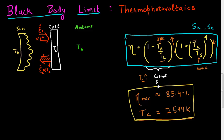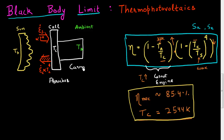So essentially, two processes are happening. I can think of this cell as an absorber which absorbs radiation and emits radiation, and the net absorbed energy can then be converted into work using a kind of Carnot engine. So deeply embedded into this formula is this Carnot engine and the absorber which absorbs radiation from the cell. If we interpret this formula in this manner, it gives rise to a new field of solar energy conversion.